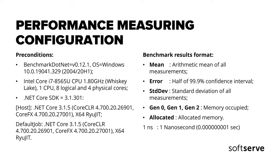As a tool for measuring performance, I will use the BenchmarkDotNet NuGet package. It's free, easy to use, and allows you to quickly get the required performance measurements of individual methods. I used it on the Intel Core i7 Whiskey Lake processor with the latest version of the .NET Core SDK. The result output is quite flexible, showing mean value, error, standard deviation, garbage collector generation memory, and allocated memory.